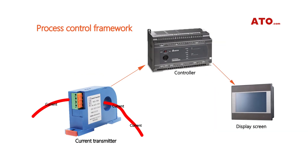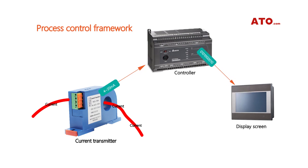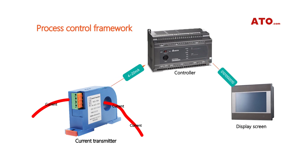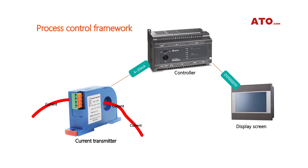In the current transmission system, the current transmitter sends the current intensity to the PLC analog quantity receiving module with a standard current of 4 to 20 mA. The PLC obtains visual current data by analyzing the analog signal and then displays it on a display screen.